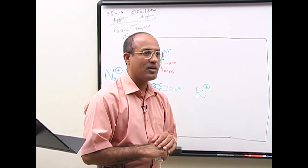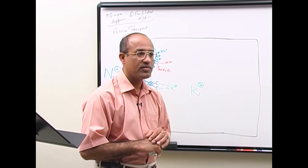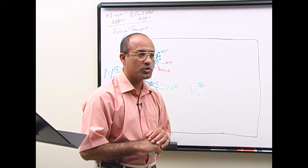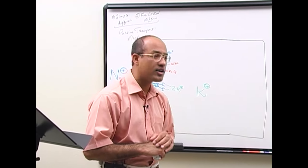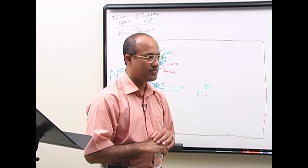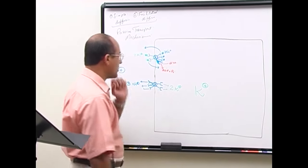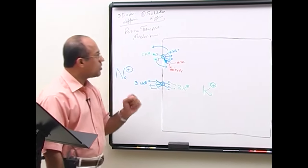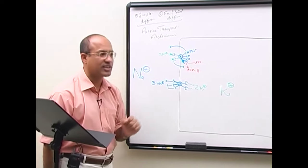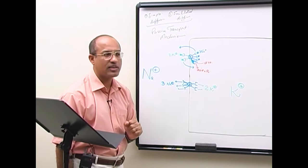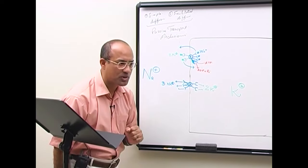Sodium-potassium ATPases are present in every cell and utilize a large portion of your ATP. Because substances are moved against the concentration gradient, this is an example of active transport.